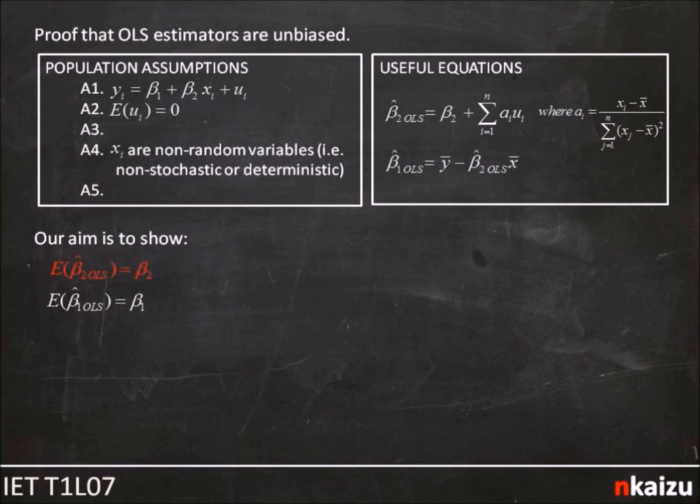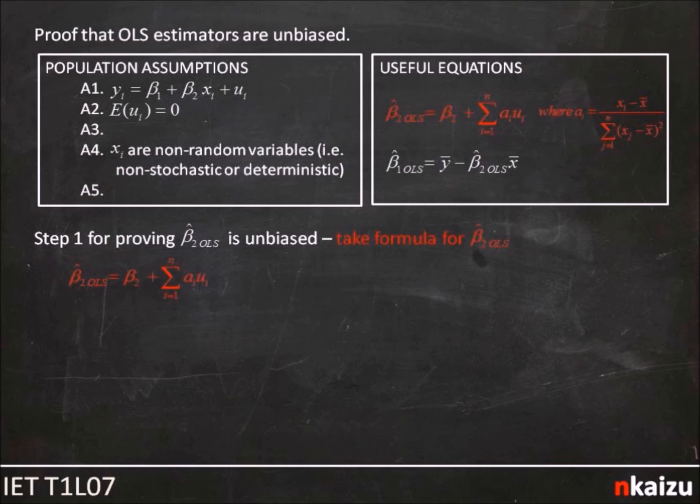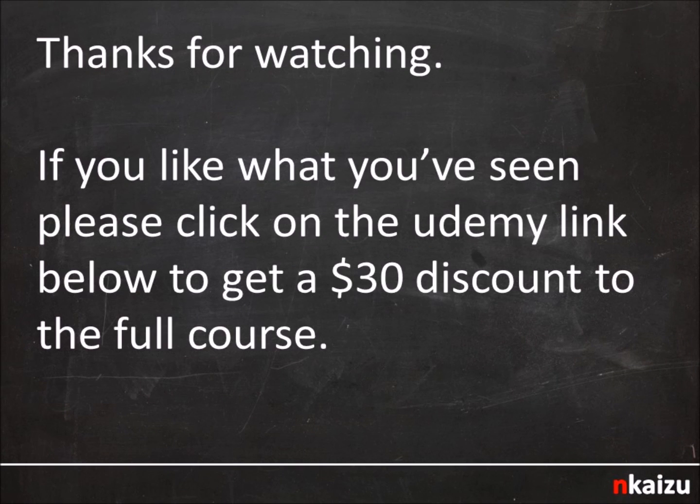I should say that in going through both these proofs, as you watch the videos at home, you should look to fill in the two attached note takers. This should help you learn them better. The links to the documents are in the info section below. So step one in proving beta_2 OLS hat is unbiased is we take the decomposed formula. Next, we take expectations. Next, we take the...